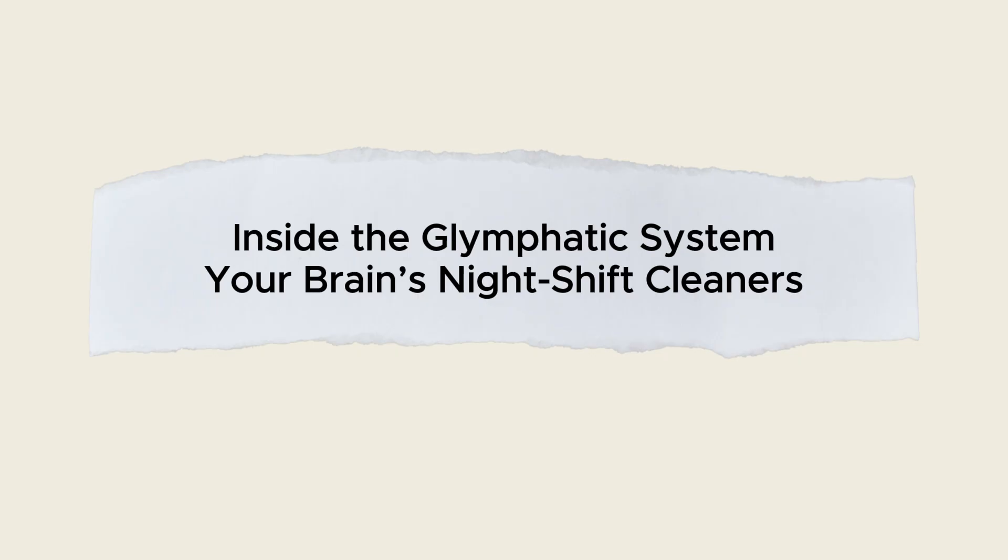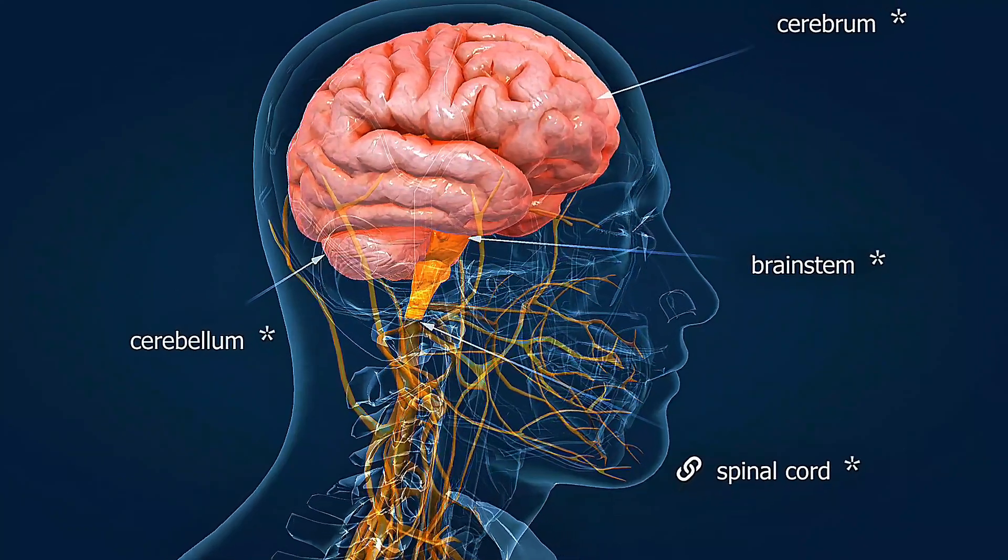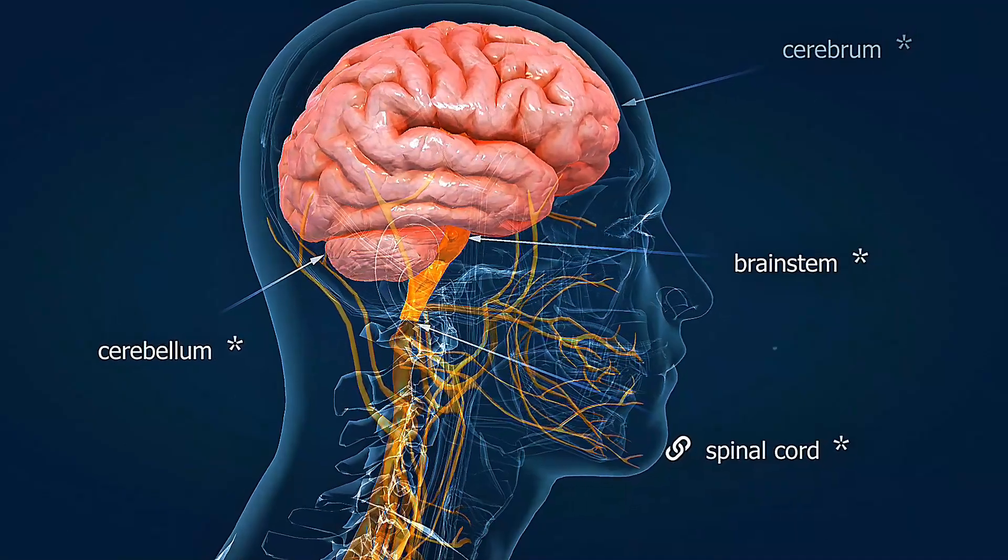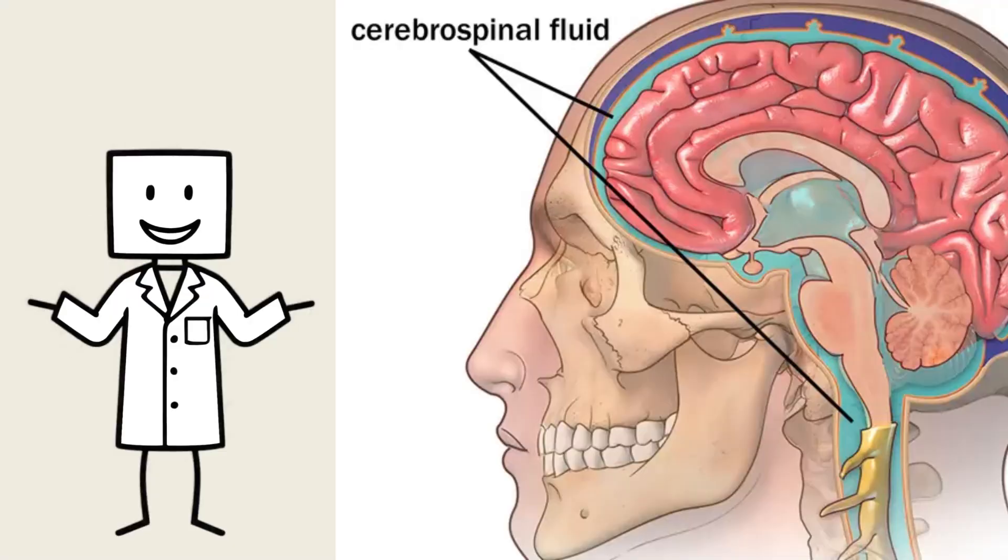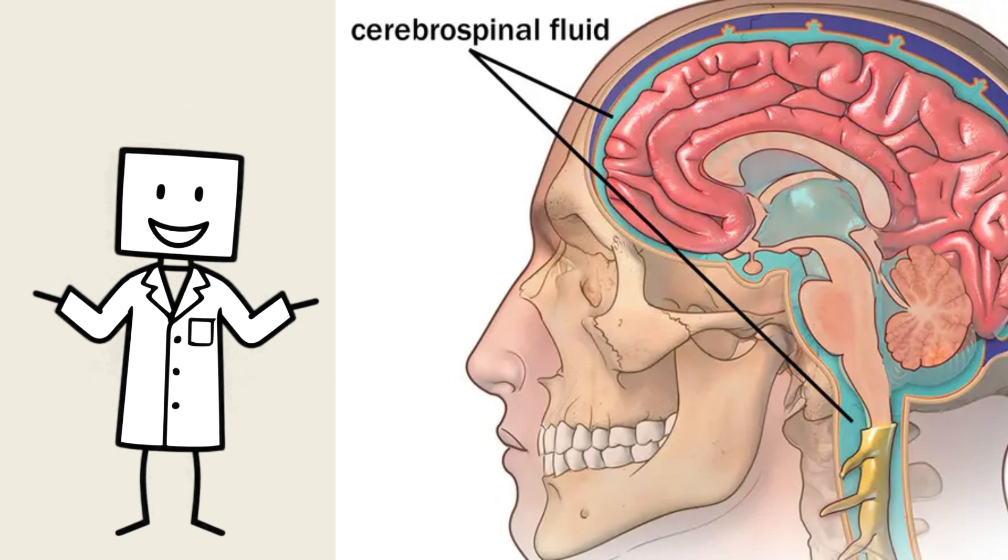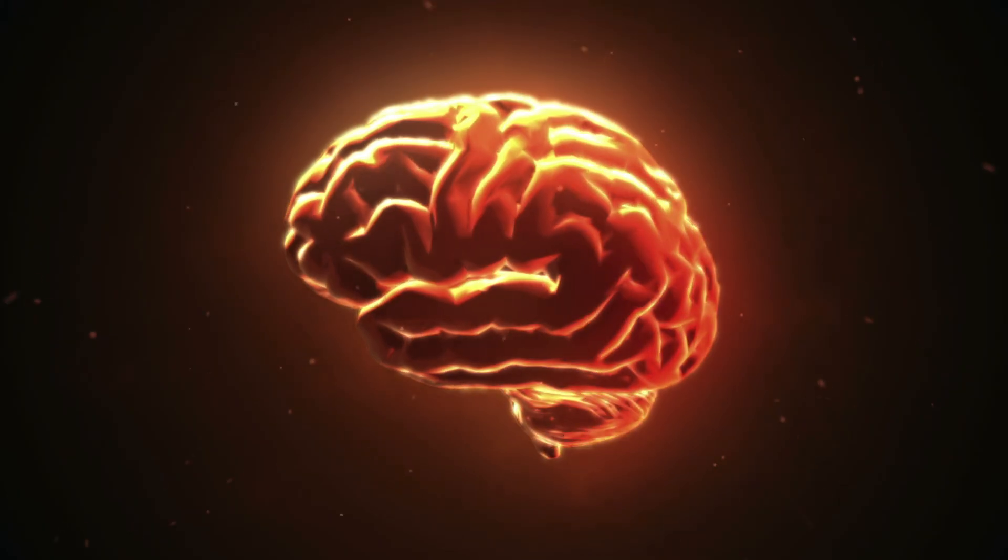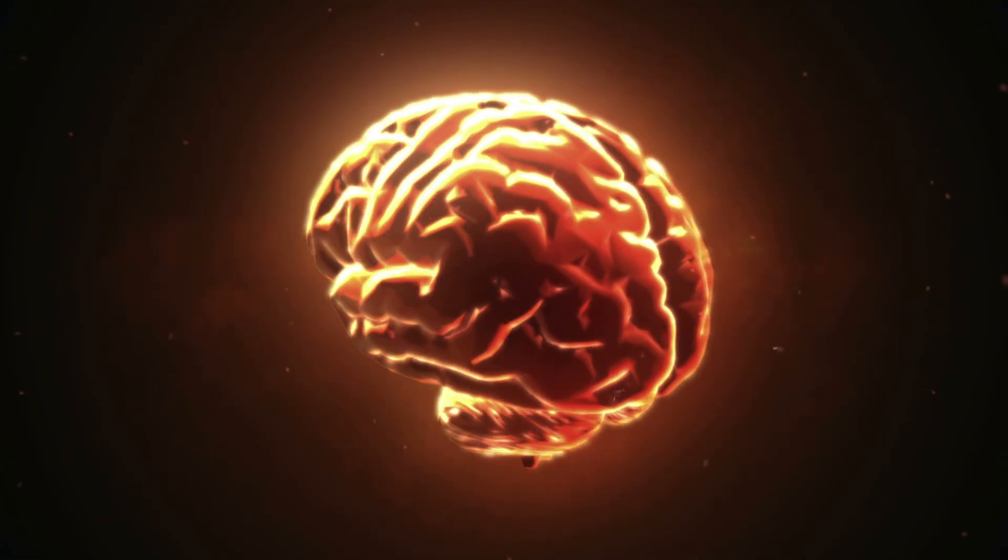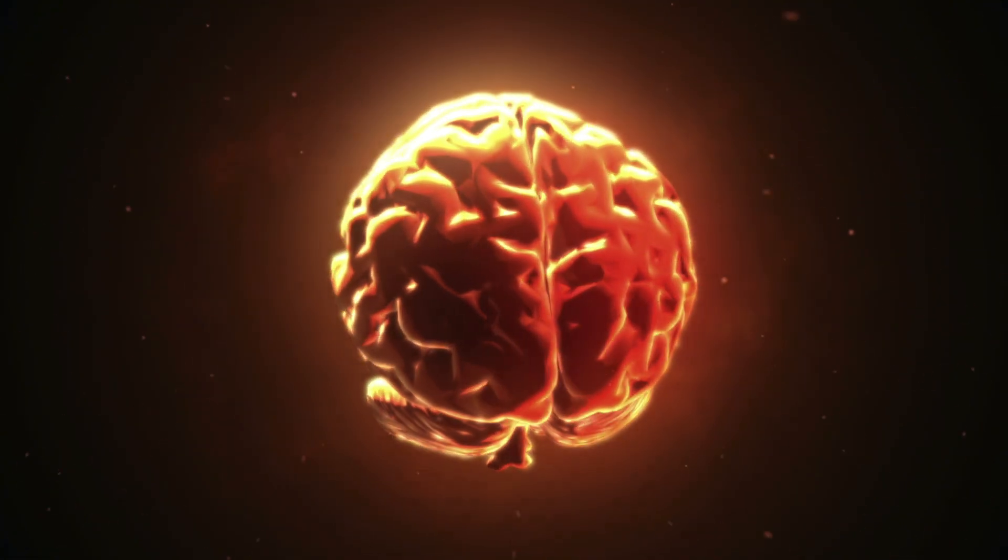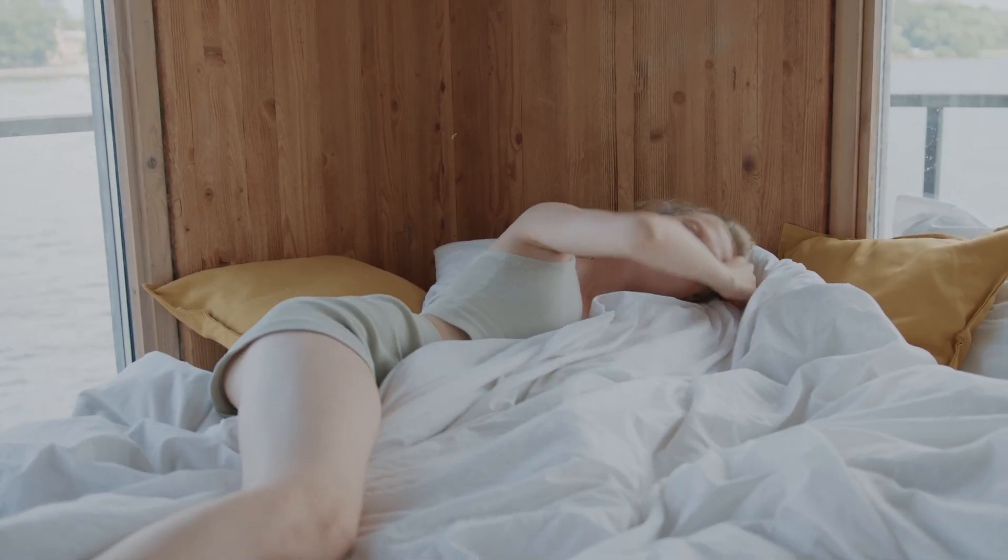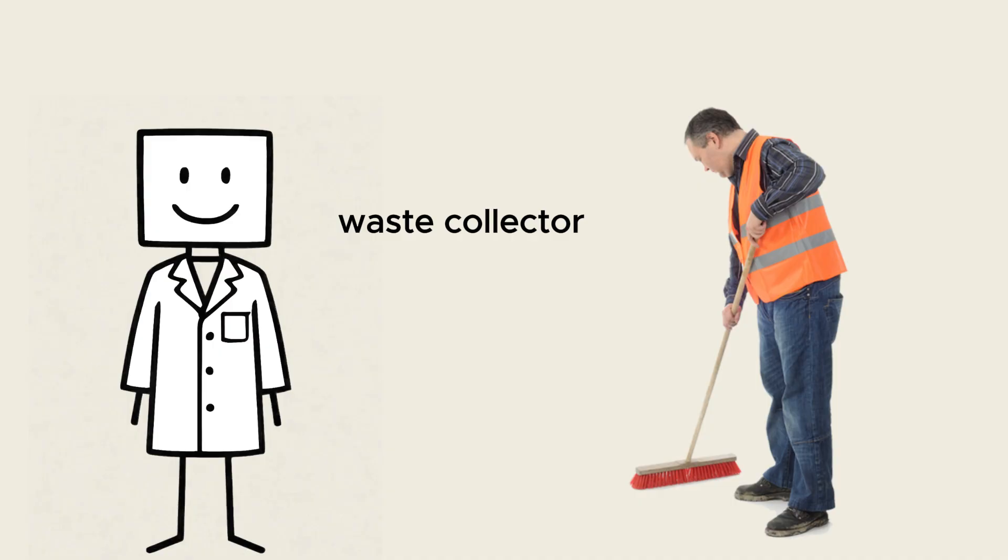Inside the glymphatic system, your brain's night shift cleaners. At the heart of the glymphatic system is cerebrospinal fluid, a clear liquid that bathes your brain and spinal cord. Think of CSF as a master dishwasher detergent, invisible, silent, and vital. During wakefulness, CSF serves primarily to cushion the brain and deliver nutrients. But once you enter slow-wave sleep, CSF takes on a new role, waste collector.